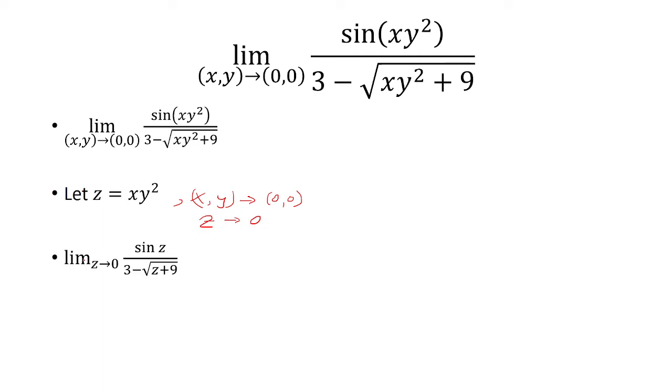So now we have limit as z approaches 0 of sine of z over 3 minus the square root of z plus 9.